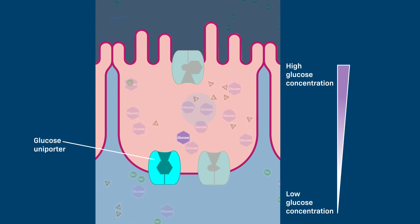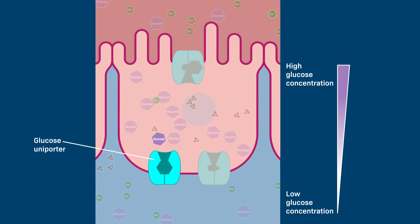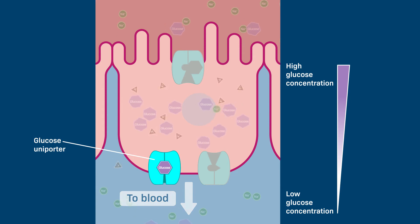Once in the cell, glucose passes out of the cell, down its concentration gradient, by passive movement through a glucose uniporter.